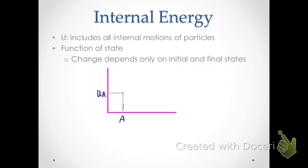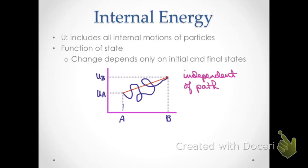For example, if we start with state A with internal energy U_A and go to state B with internal energy U_B, it doesn't matter how we get from A to B — whether in a straightforward path or in some kind of convoluted roundabout way — the actual change in internal energy is independent of that path. It is simply equal to U_B minus U_A.